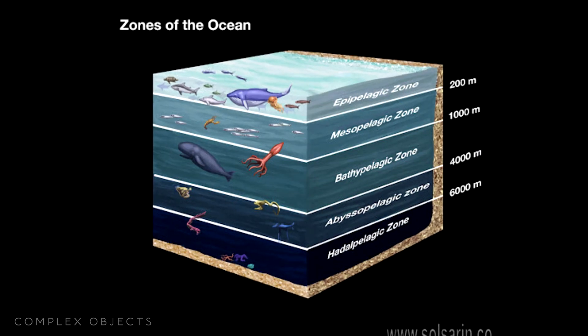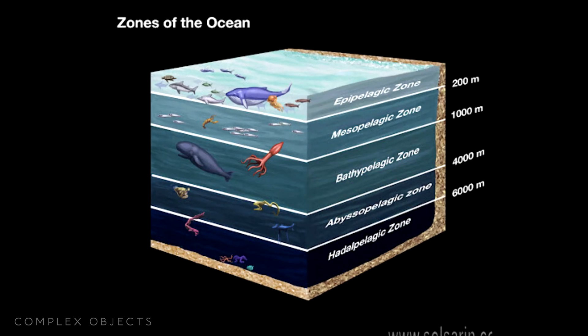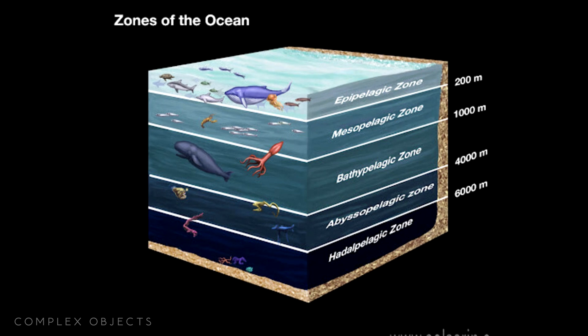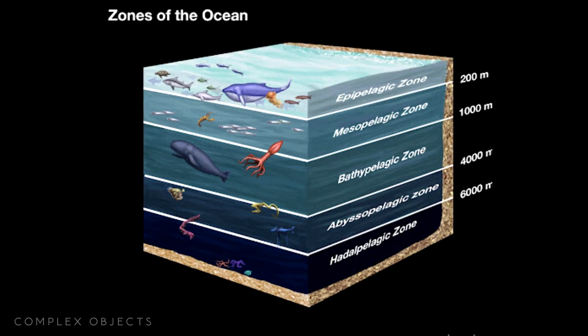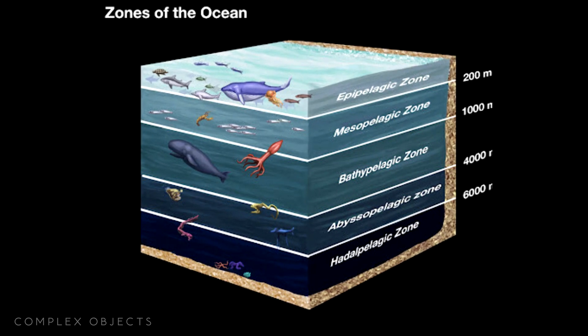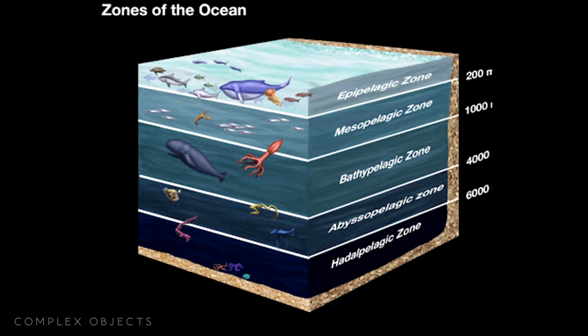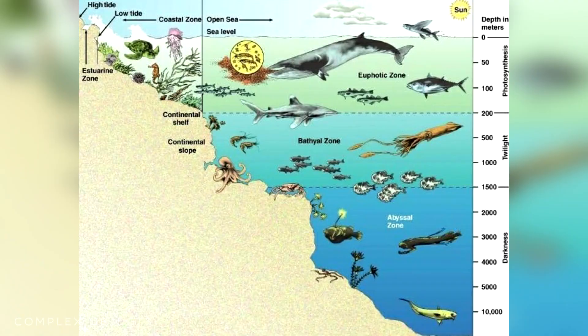There are ecotones in the ocean too. The ocean is divided into segments based on depth, and each of these segments supports radically different flora and fauna. The mixing zones between them are ecotones.